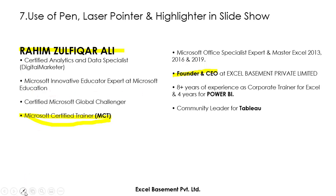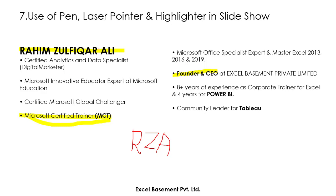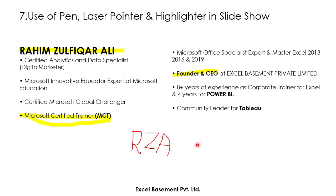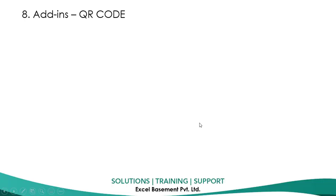You can also use the pen to write during the slideshow. Since I'm using my mouse the handwriting may not be very clear, but if you have a touch screen and pen available you can write with your own hands. So these are super cool features available in PowerPoint: you can highlight text, write text, and even use the laser pointer.